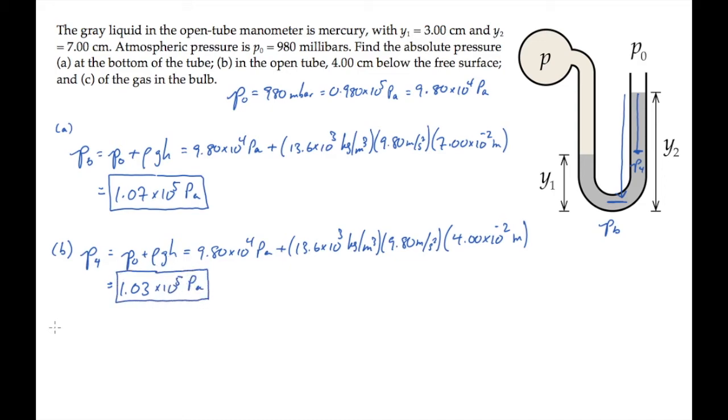Part C asks for the absolute pressure p of the gas in the bulb. The pressure p is assumed to be constant throughout the tan gas region, so the pressure right here at the gas-mercury interface is also p. At the same depth in the mercury fluid, the pressure is constant, so p has to equal p4. And that's 1.03 times 10 to the fifth Pascals.